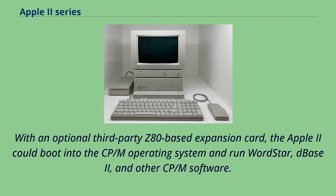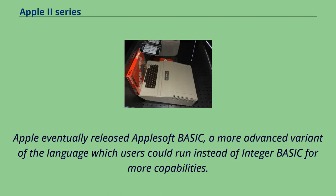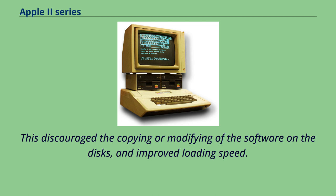With the release of Mouse Paint in 1984 and the Apple IIgs in 1986, the platform took on the look of the Macintosh user interface, including a mouse. Apple eventually released AppleSoft BASIC, a more advanced variant which users could run instead of Integer Basic. Some commercial Apple II software booted directly and did not use standard DOS disk formats, which discouraged copying of the software and improved loading speed.